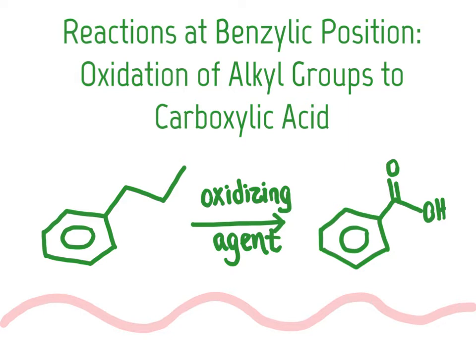Specifically, what we are going to look at is the oxidation of alkyl groups that are directly attached to the aromatic ring, treating them with an oxidizing agent. The product corresponds to breaking off all but the very first carbon of that group, so that we end up with a carboxylic acid as the oxidized product. The general guideline is that we oxidize the benzylic carbon to a COOH group.